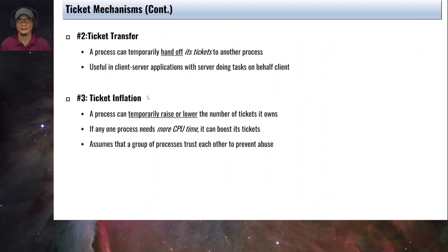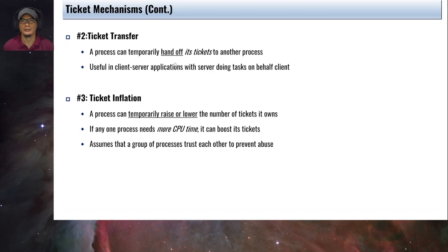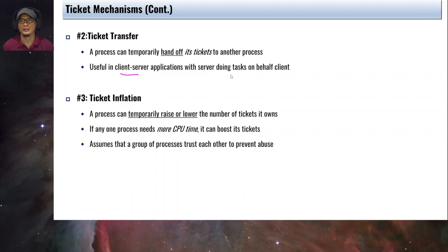The second ticket mechanism is called ticket transfer. A process can temporarily hand off its tickets to another process, allowing you to give more tickets to a higher-priority process. This is useful in client-server applications where the server is doing tasks on behalf of the client — the client transfers more tickets to the server, giving it higher chances of winning the lottery and thus being scheduled.